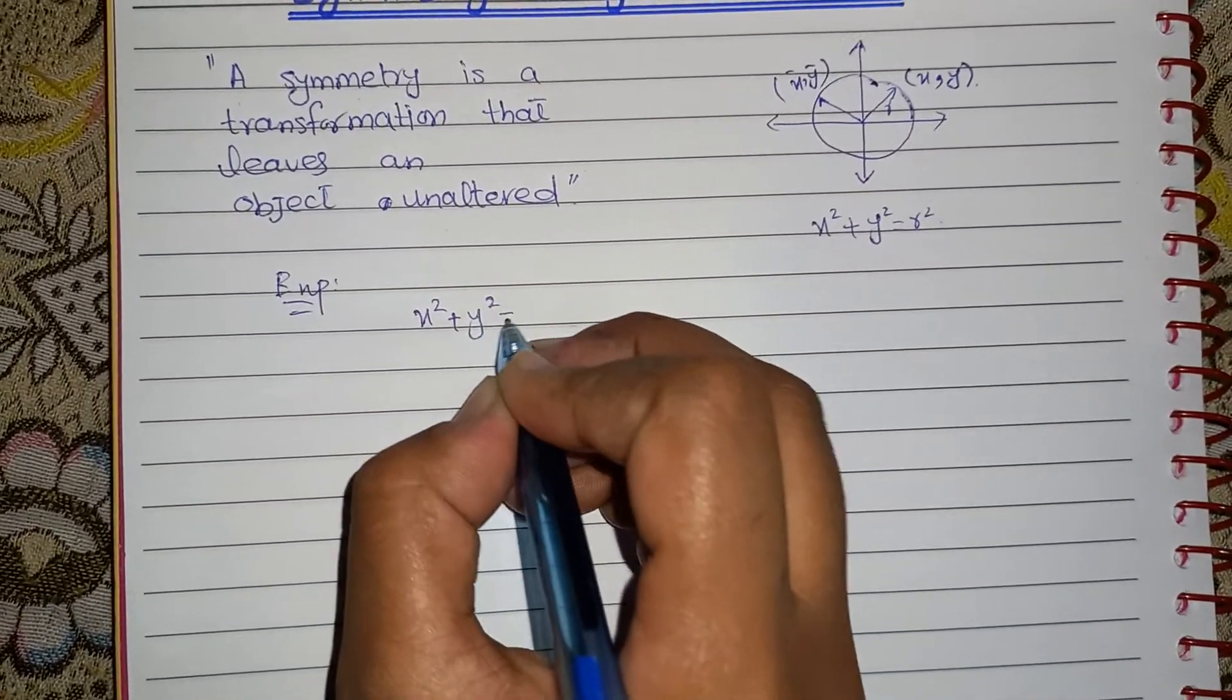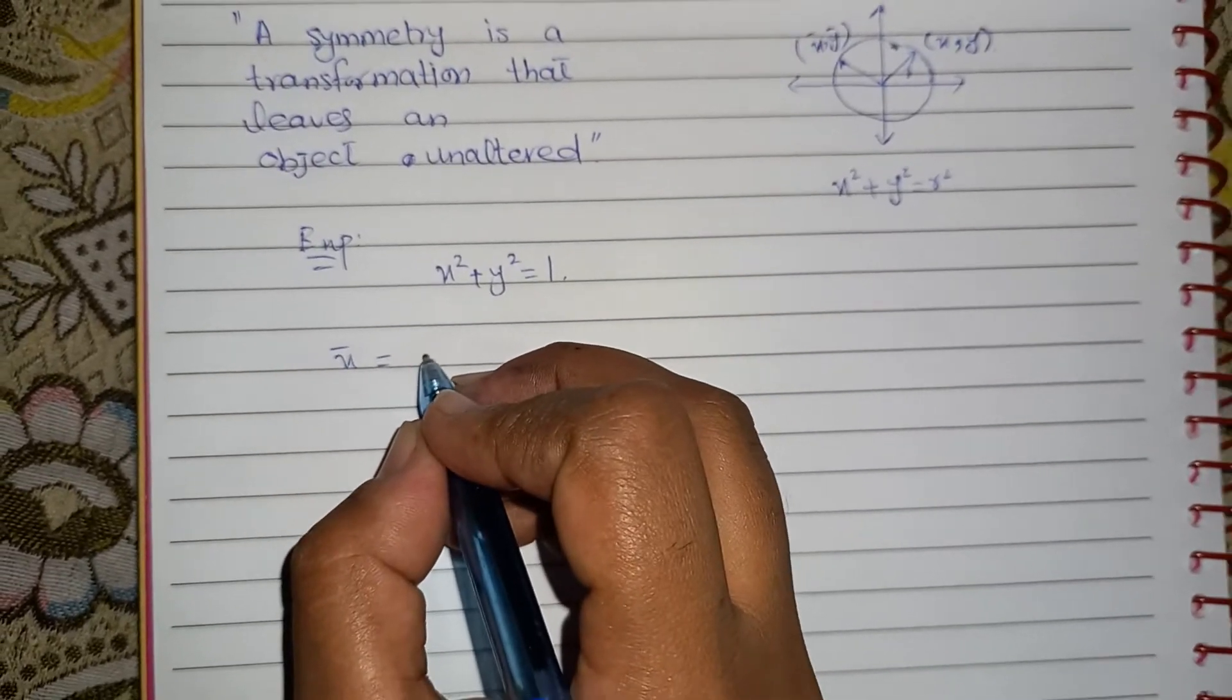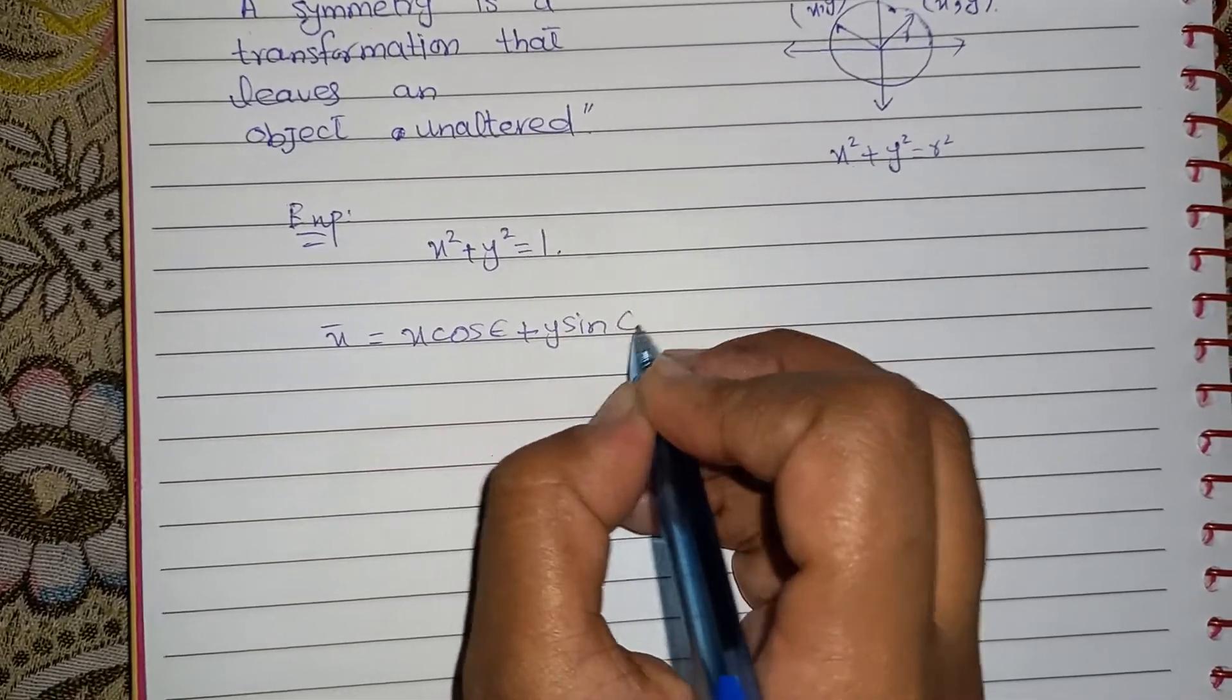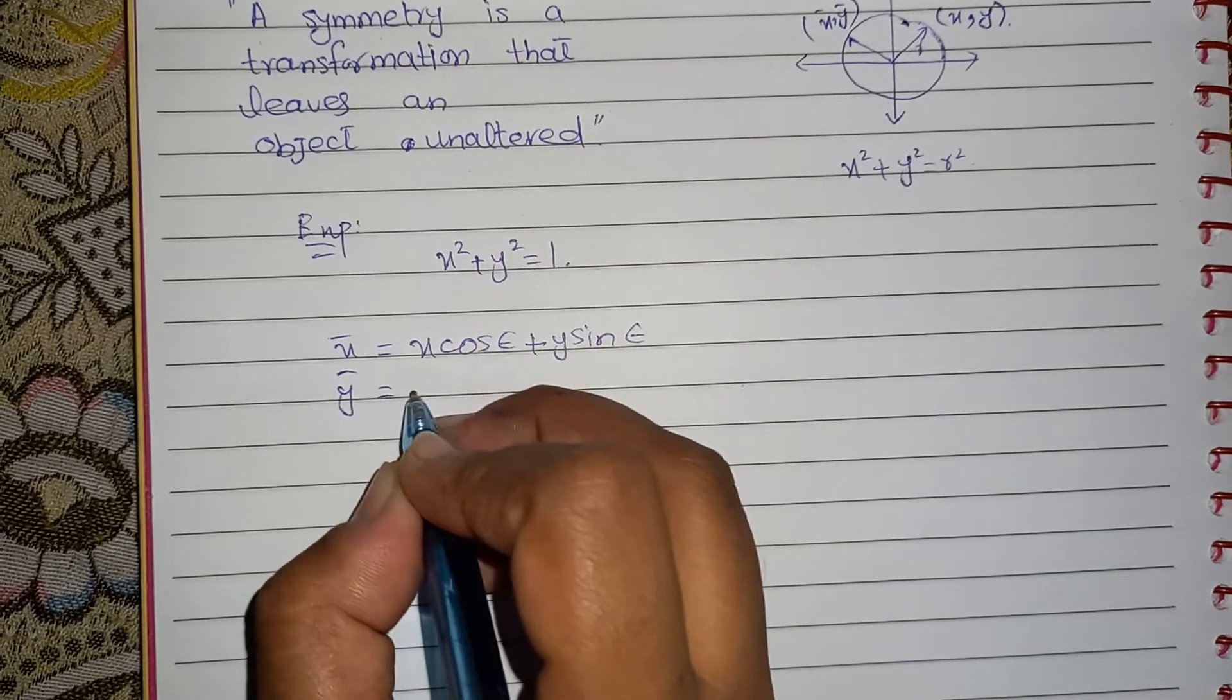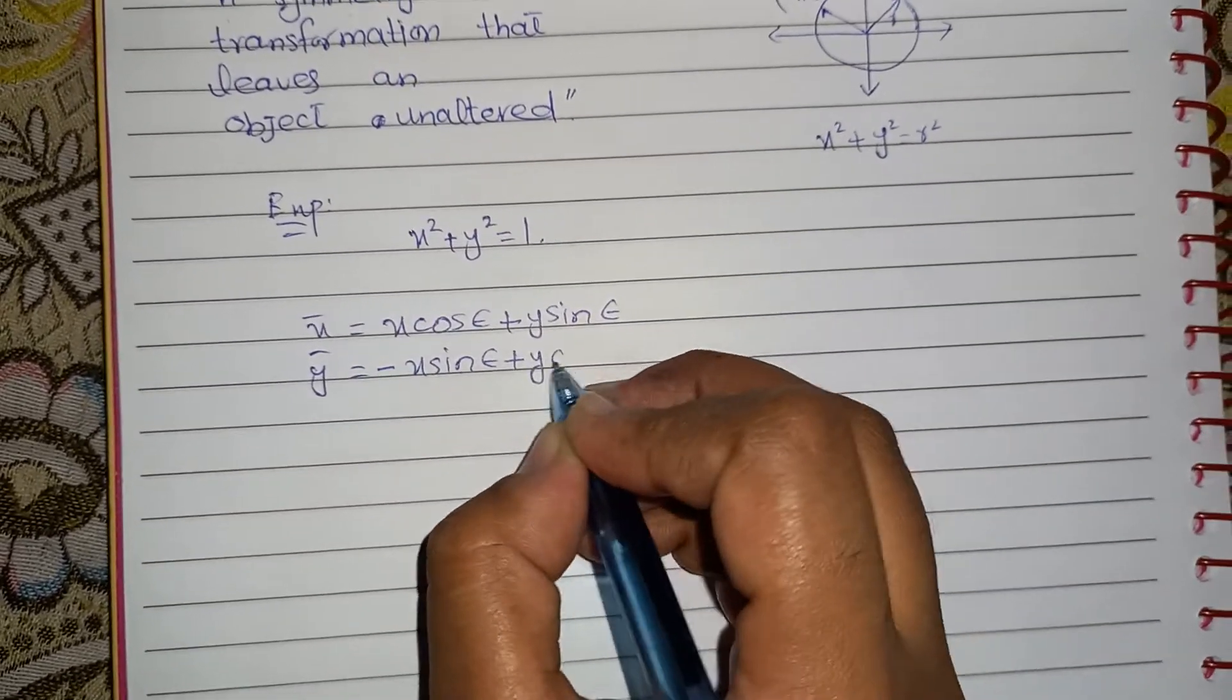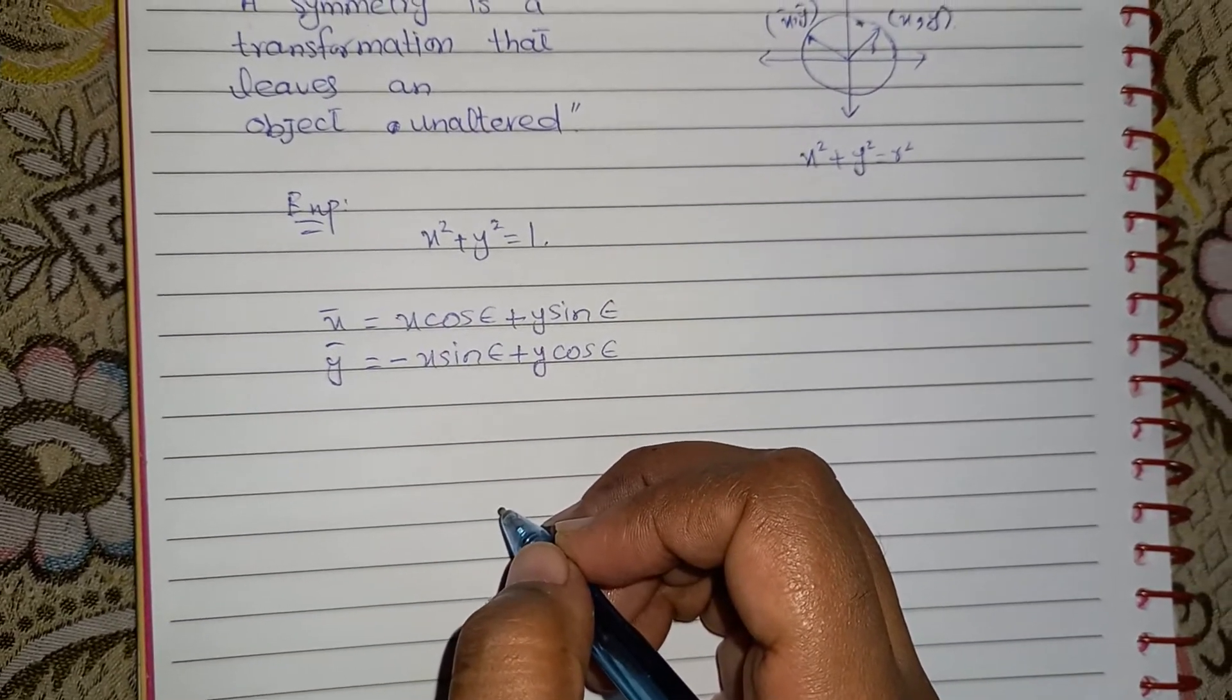x² + y² = 1. And we are given a transformation: x̄ = x cos ε + y sin ε, and ȳ = -x sin ε + y cos ε. Basically, these are the rotational transformations for a circle.